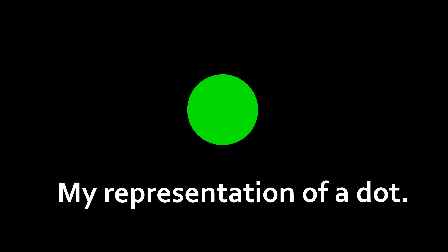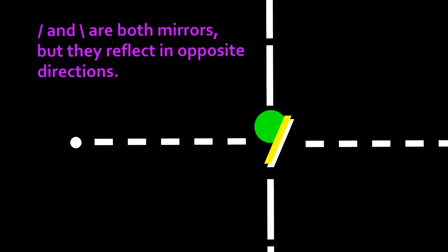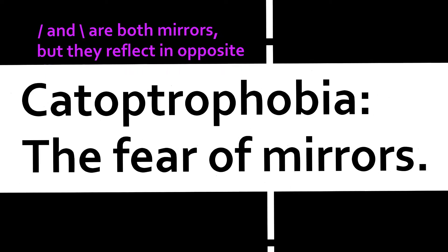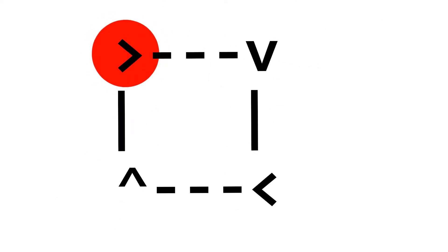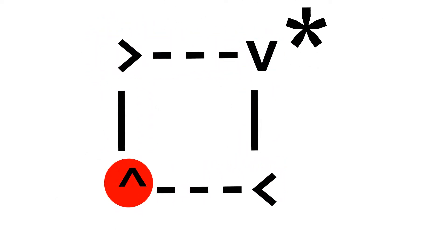In ASCII Dots, units called dots move along a path. A dot is created at the start of the program wherever a period is located. It can move horizontally along minus symbols and vertically along pipes. Slashes act as mirrors that dots bounce off of to change direction. There is also another option to change the direction of dots: Befunge-style arrows. These arrows have a very annoying quirk that doesn't really need to exist, but we'll get to that when we get to that.